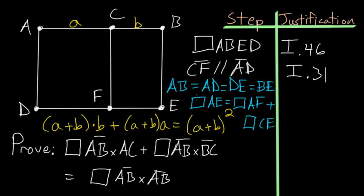And from this equation here, we can essentially end our proof, because this square on AE, this entire figure here, we know is formed from the line AB. So this part right here is just this part of the statement that we're trying to prove.